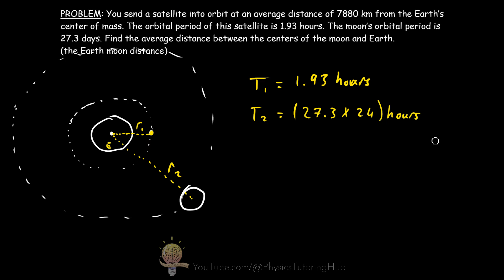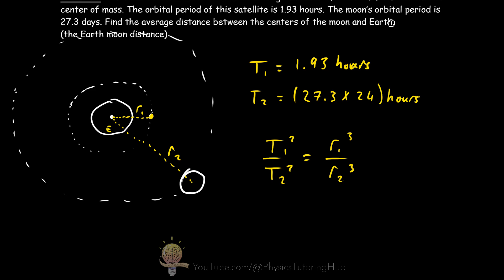Now if we write Kepler's third law in equation form, we've got the ratios of the squares of the orbital periods, T1 and T2. And that's equal to the cubes of the average distances, the ratio of the cubes of the average distances of both orbiting objects. So all we need to do to find the Moon's average distance is rearrange this equation to make R2 the subject of the formula.